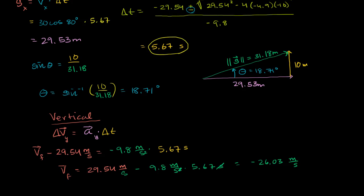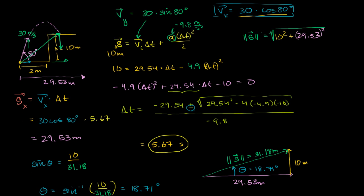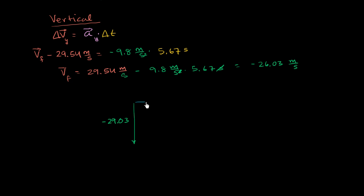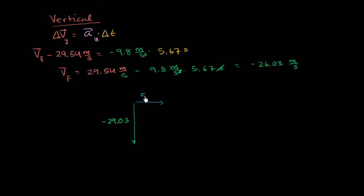So what is our total velocity when we fall back to that landing point? The vertical component of our velocity is negative 26.03 meters per second in the downward direction. And the horizontal component of our velocity hadn't changed the entire time — that was 30 cosine of 80 degrees, which equals 5.21 meters per second. Both are in meters per second.